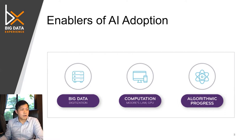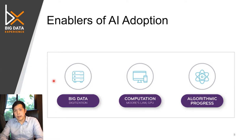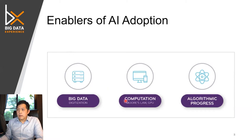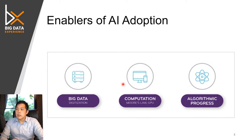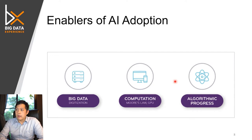The second enabler is better ways to compute — we have GPU computation. And we have algorithmic progress that allows us to compute more efficiently and make computers learn more effectively. So let's take a look at each of these factors that enable the development of AI.